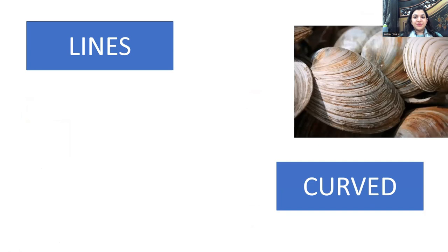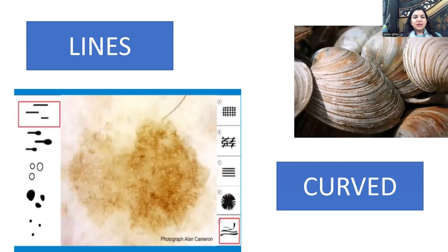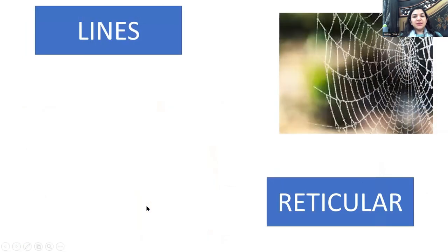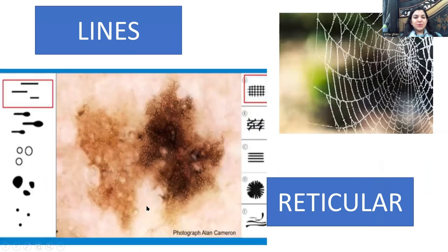Curved lines are seen in solar lentigo. The lines are curved and present throughout the lesion. This pattern is diagnostic of solar lentigo.